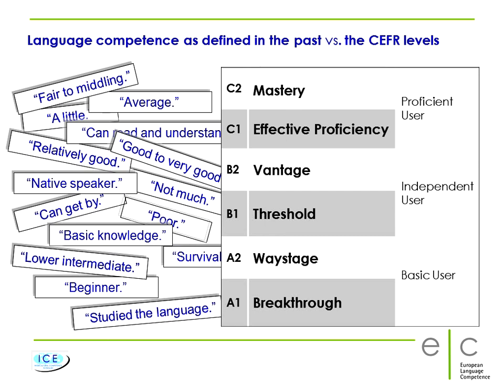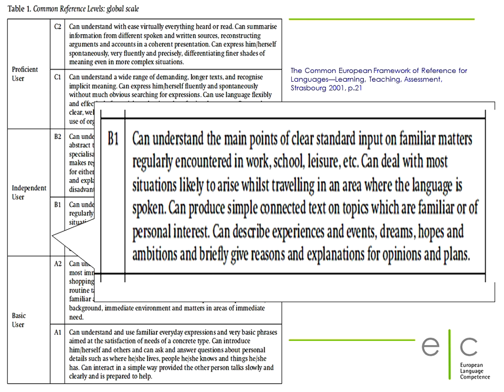Perhaps the most interesting level on the CFR scale is B1, formerly known as threshold level. The B1 descriptors describe basic communicative competences in a great variety of everyday situations. A speaker at B1 may know only one way of expressing gratitude, asking for a favour, criticizing, requesting, etc. — enough, anyway, to master most everyday situations more or less successfully. This is precisely what B1 is about and why level B1 plays an important role in foreign language teaching in general.